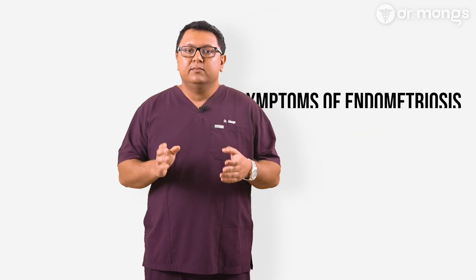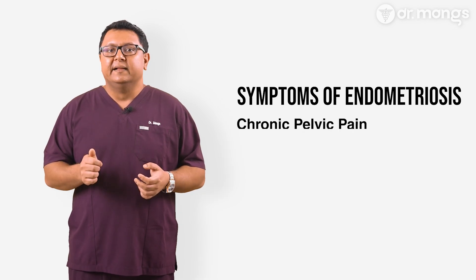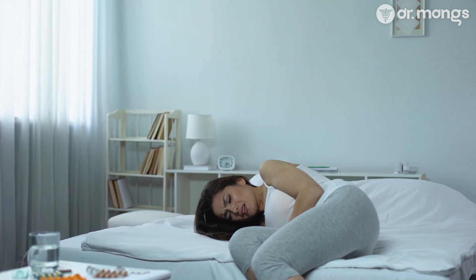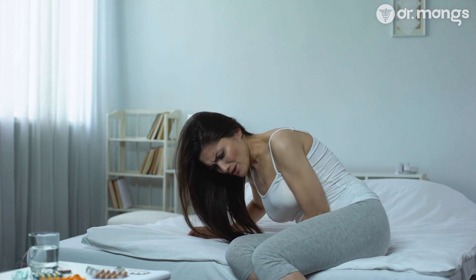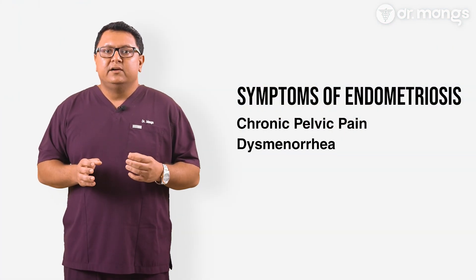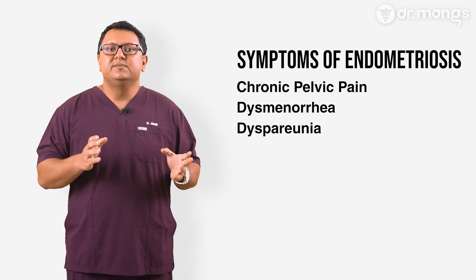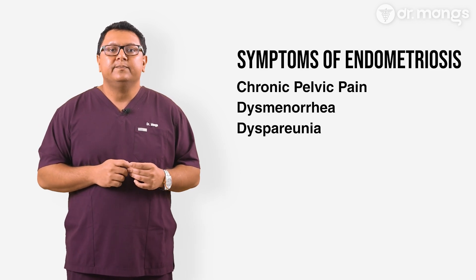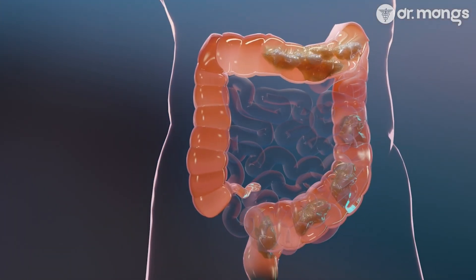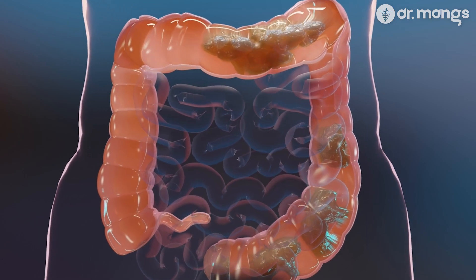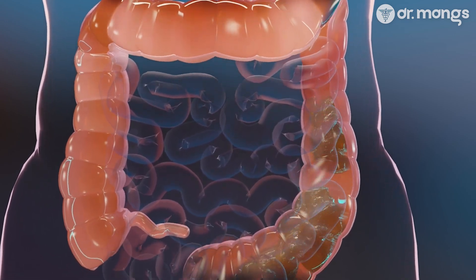The symptoms of endometriosis can vary widely both in type and severity. Some women may experience debilitating pain while others might have mild symptoms or none at all. The most common symptoms include chronic pelvic pain — the hallmark symptom of endometriosis — which often coincides with menstruation but can occur at any time. Dysmenorrhea, or painful periods, may begin before and last several days into your period. Dyspareunia is pain during or after sexual intercourse, particularly with deep penetration. Dyschezia is painful bowel movements, often accompanied by gastrointestinal symptoms like bloating, diarrhea, or constipation, especially during menstruation.